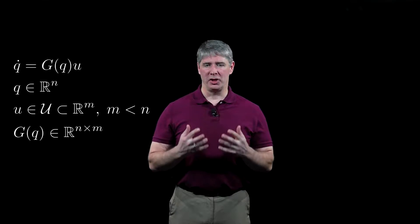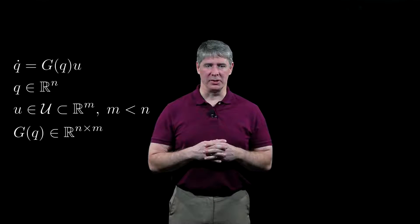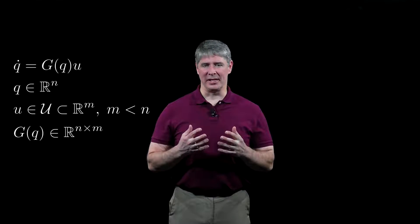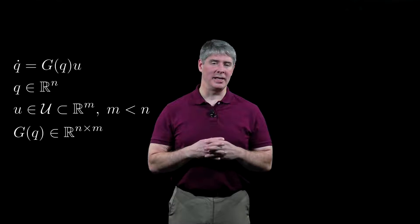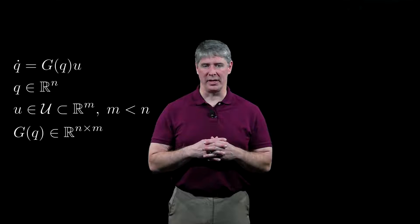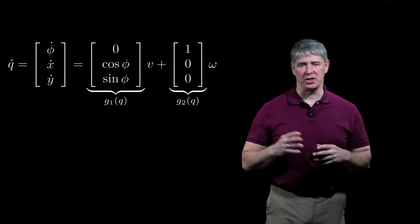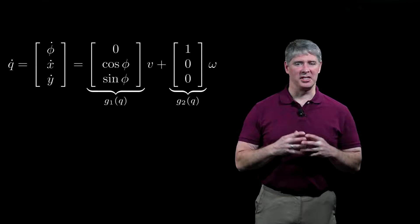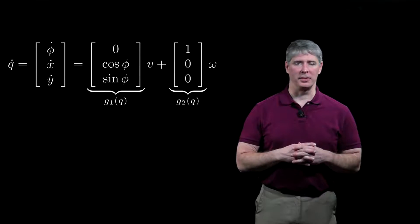The control system for a wheeled mobile robot can be written in the general form q-dot equals g of q times u, where q is the n-dimensional configuration, u is the m-dimensional control input, and the m columns of the g-matrix are the control vector fields associated with each control input. For the canonical non-holonomic robot, the specific form is shown here, where g1 is the forward motion vector field and g2 is the spin-in-place vector field.